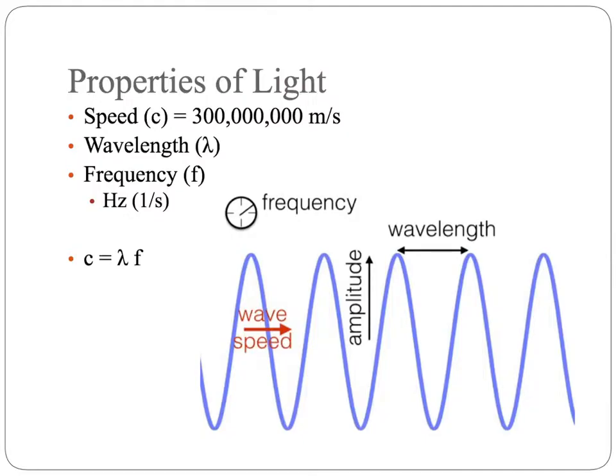Light has certain key properties that we will be dealing with in this module. The first of which is speed. Light travels at a rate of 300 million meters per second. Or to put that in scientific notation, it's 3.00 times 10 to the eighth meters per second. And this speed is the same no matter whether it is a radio wave or a gamma ray. That all light travels at the same speed in the vacuum of space. Light does change speed as it moves through certain substances here on Earth.